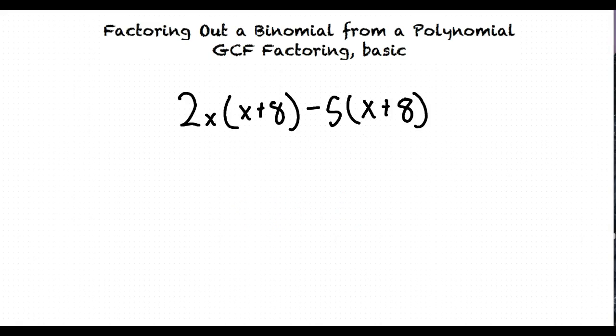The same property can be used when factoring out binomials from polynomials. If we look at our example problem, 2x times (x plus 8) minus 5 times (x plus 8), in this problem we need to factor out the (x plus 8) and then rewrite the equation. We can achieve this by using the distributive property, except we substitute (x plus 8) for C.